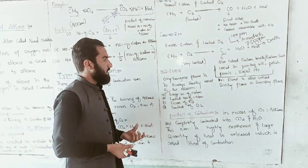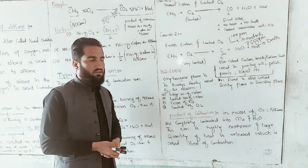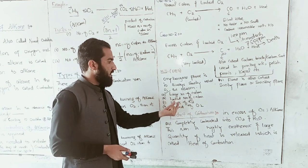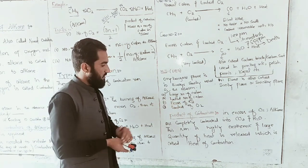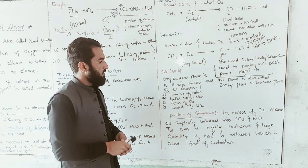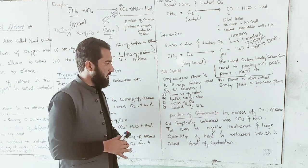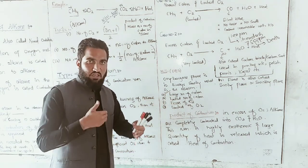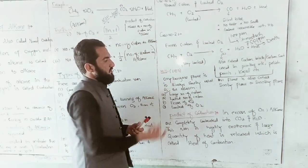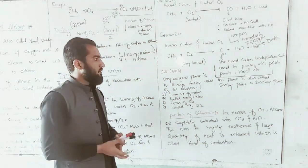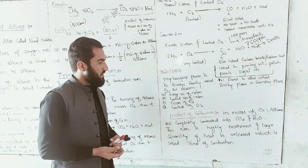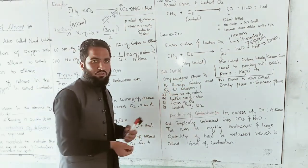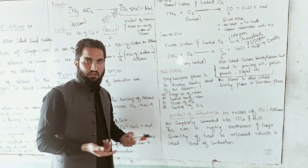MCQ: What is the reason for a sooty or smoky flame? Option A: large number of carbon atoms. Option B: limited number of carbon atoms. Option C: excess of oxygen. Option D: limited oxygen. The correct answer is option A — large number of carbon atoms — because with a large number of carbon atoms and limited oxygen, the flame produces smoke and soot.